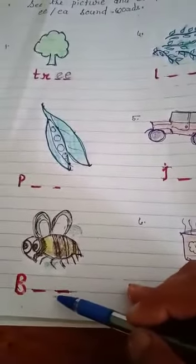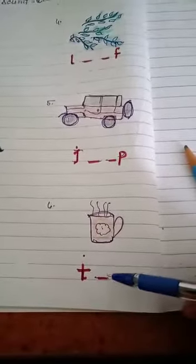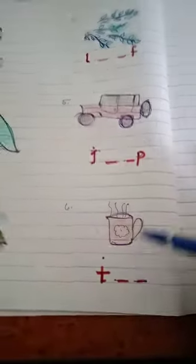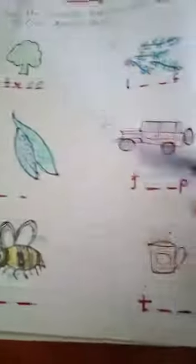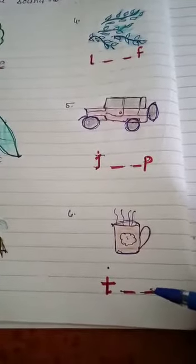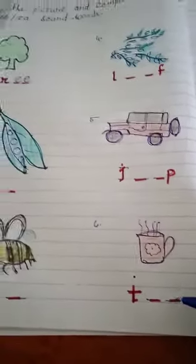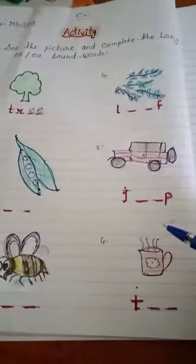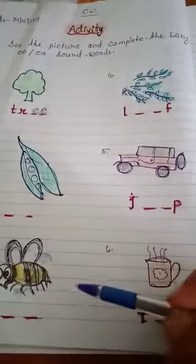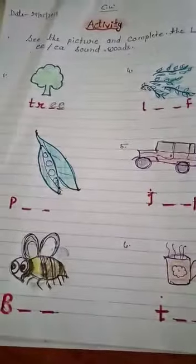And next, T, E-A sound word, write there, okay, write here E-A sound. So complete the word tea, okay. Dear students, all words are complete here, and read them, okay.